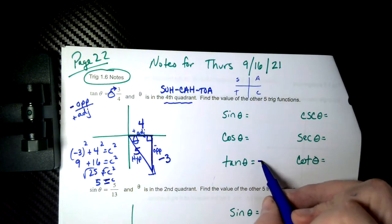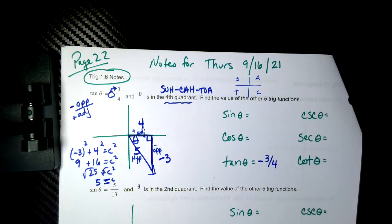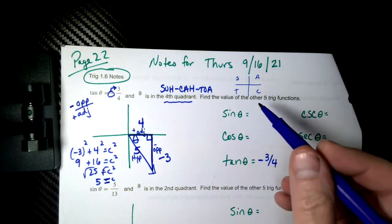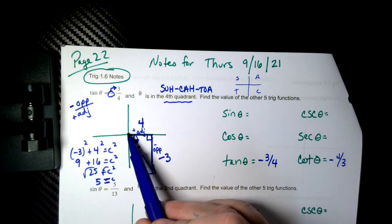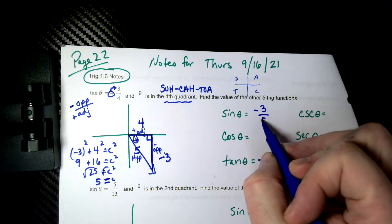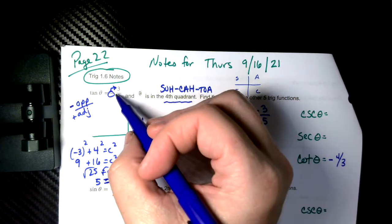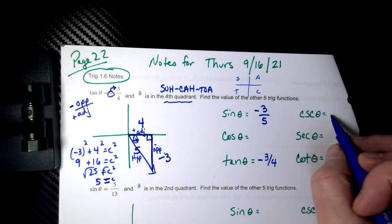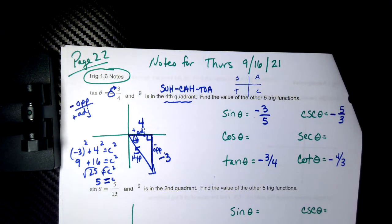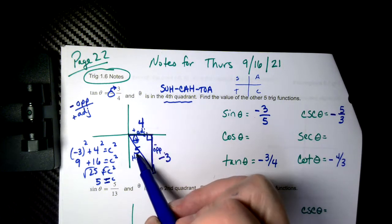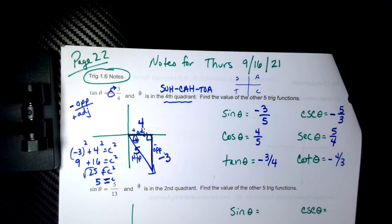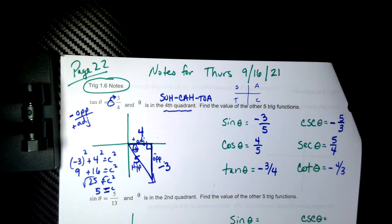Now we can put five on the hypotenuse. Now we can fill all these in. The one that they gave us was tangent negative three fourths. We can do the reciprocal right away, negative four thirds. Sine here's theta always by the origin, opposite negative three over the hypotenuse which is five and you can put that negative out in front. Let's do the reciprocal, negative five thirds. Cosine is the adjacent leg over the hypotenuse, four over five. Reciprocal, five over four. And that's what all the problems are going to look like.